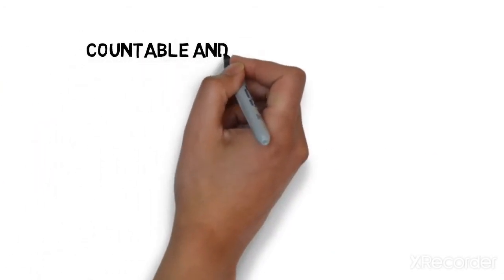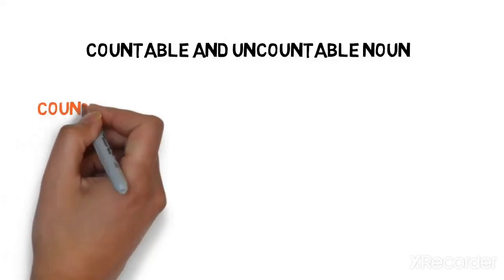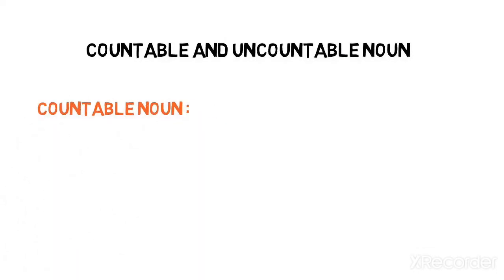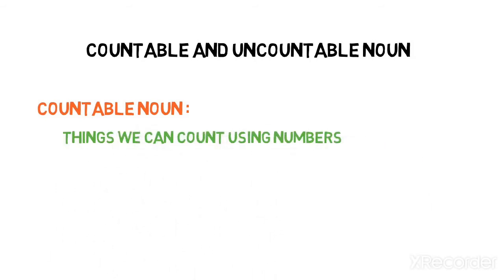Countable nouns and uncountable nouns. So what are countable nouns? Countable nouns are things that we can count using numbers. So if anything you can count, it comes in the category of countable nouns.